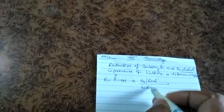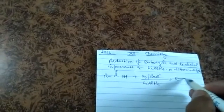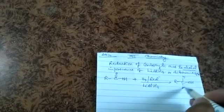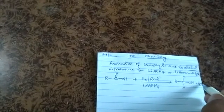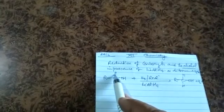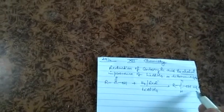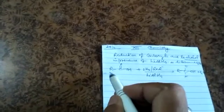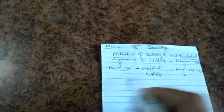Lithium aluminium hydride. The product formed is R-CH2OH. Oxygen is removed and hydrogen is added to form the alcohol.